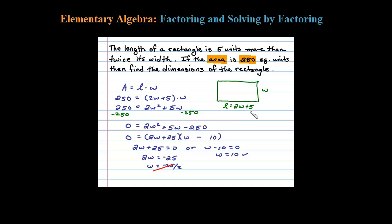If the width is 10 units, we can figure out the length using 2W plus 5. So 2 times 10 plus 5, that's going to be my length—five more than twice the width. So 20 plus 5, we're looking at 25 units for the length.